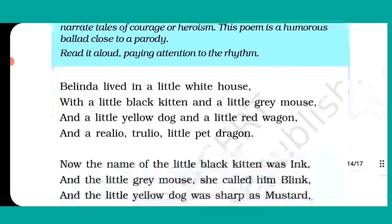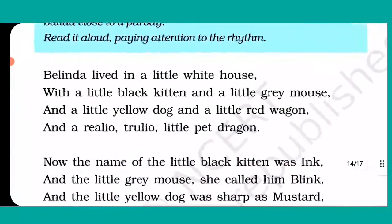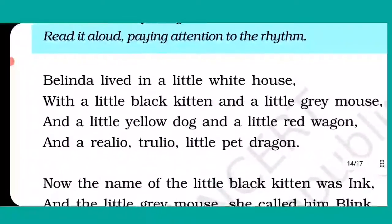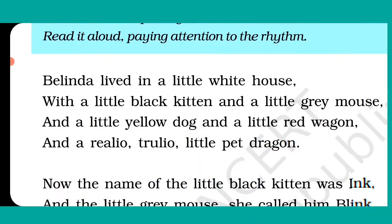Let's continue with the very first stanza of this beautiful poem. Here it is written: Valinda lived in a little white house with a little black kitten and a little grey mouse and a little yellow dog and a little red wagon and a realio trulio little pet dragon. Here, 'realio trulio' refers to 'real' and 'true' respectively.